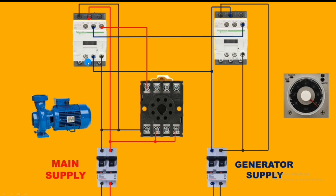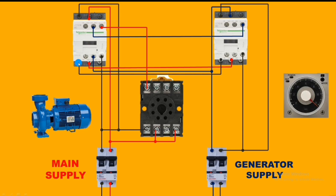The outputs of both contactors are looped together. First, loop L2 to L2 for the line loop, and second, loop L1 to L1 for the neutral loop. Whether the main contactor or the generator contactor is running, the supply will come to the house load. So we loop both line and neutral from the contactors and connect them — neutral to house load and line to house load.